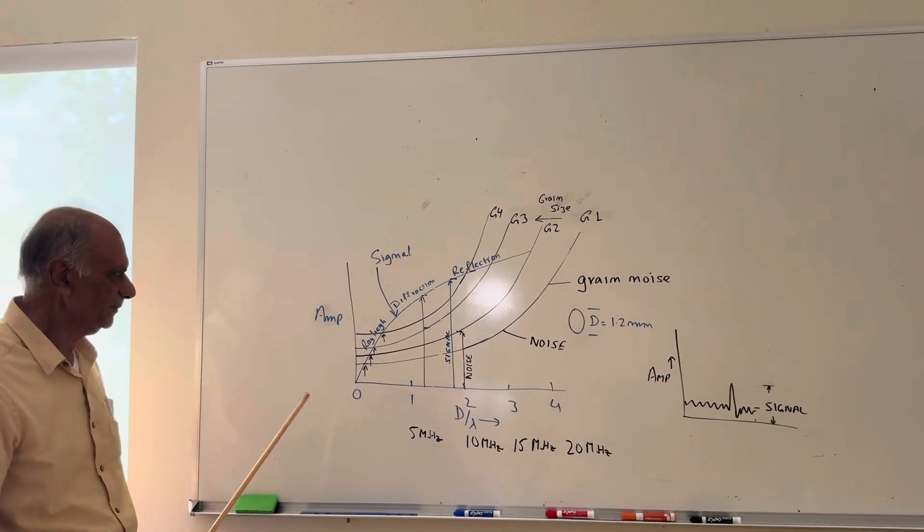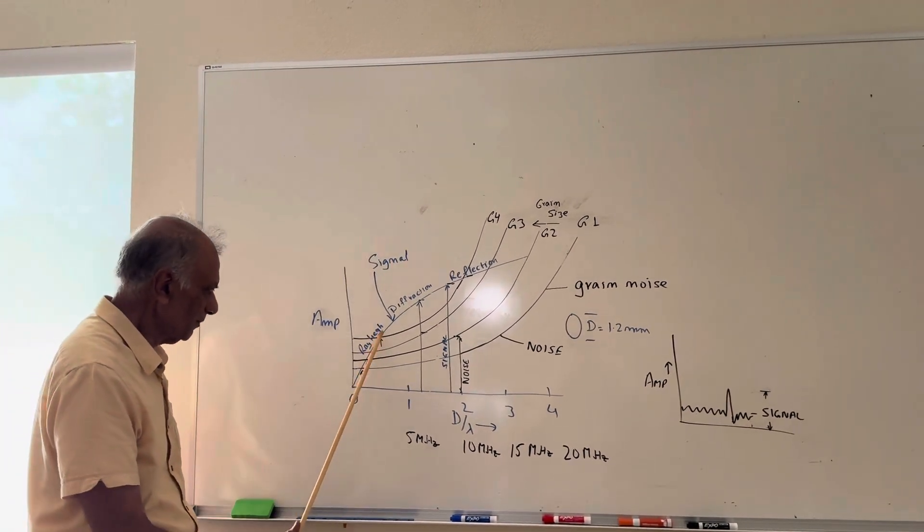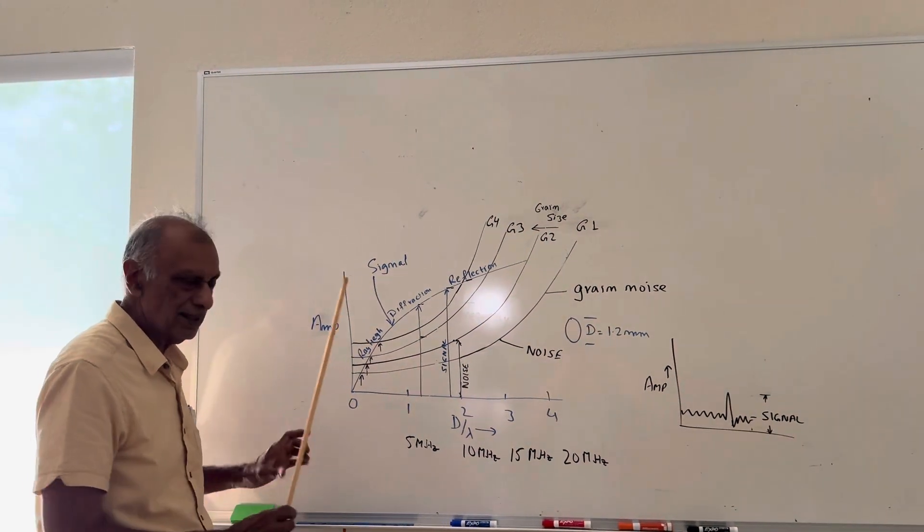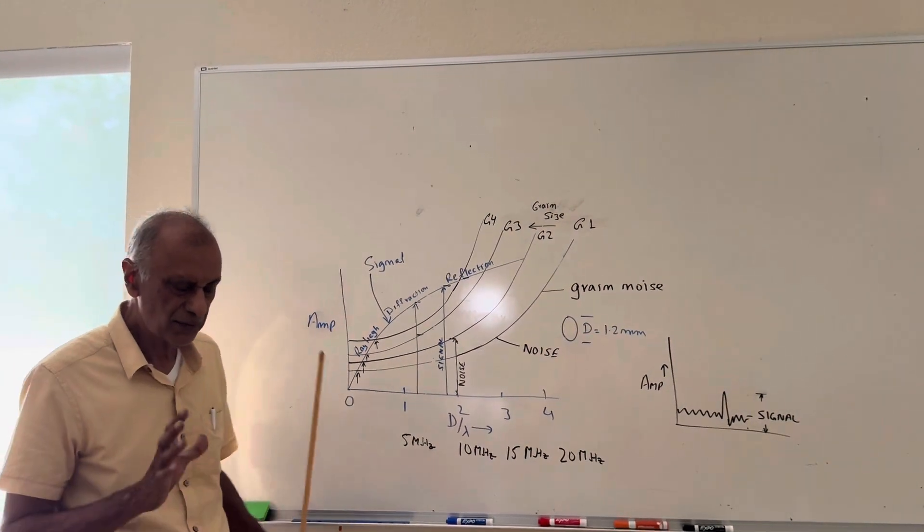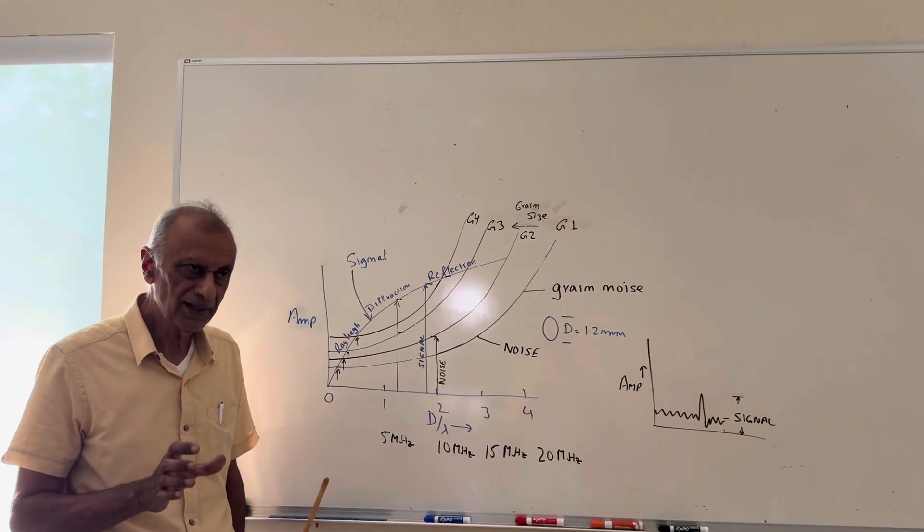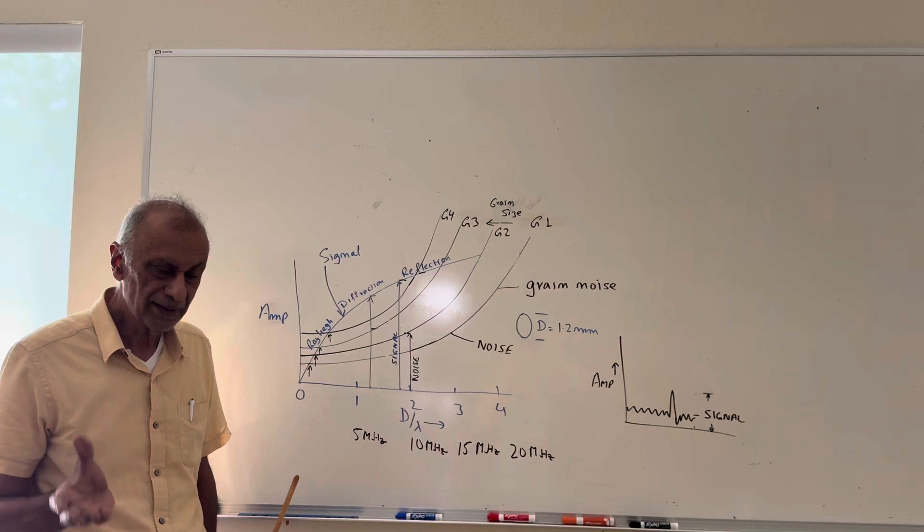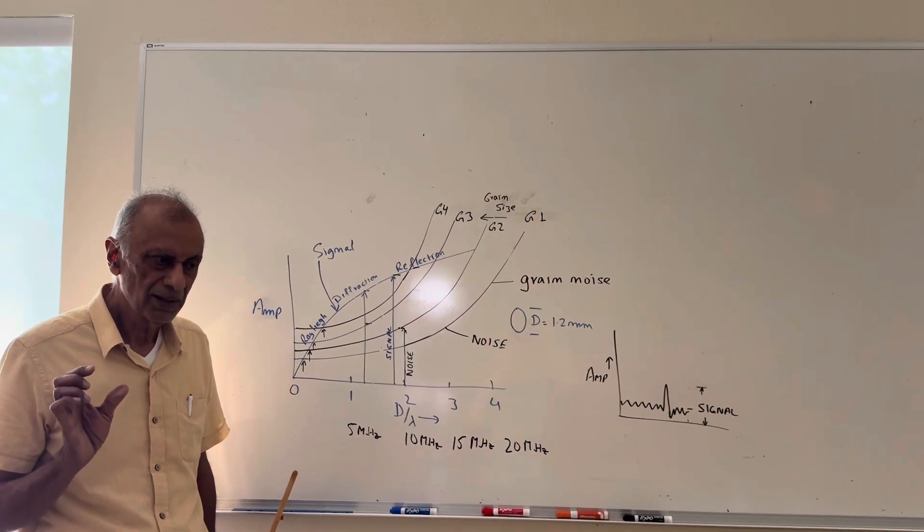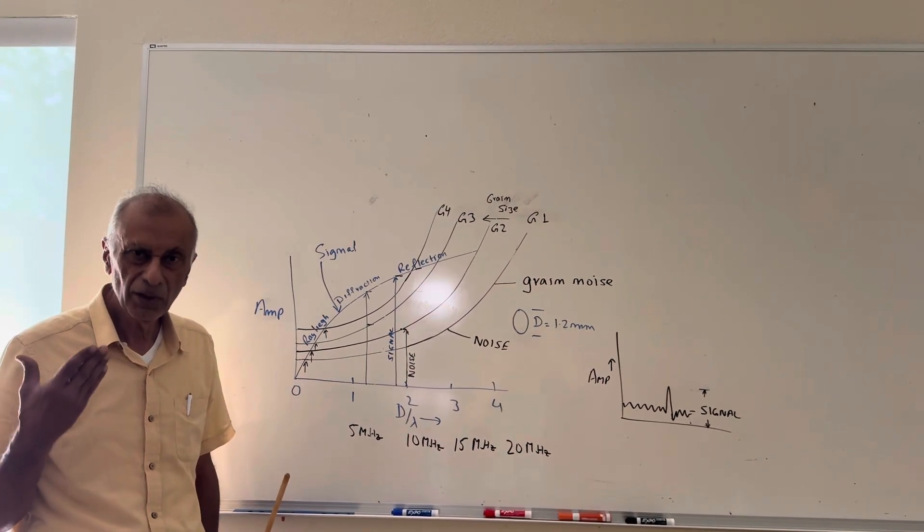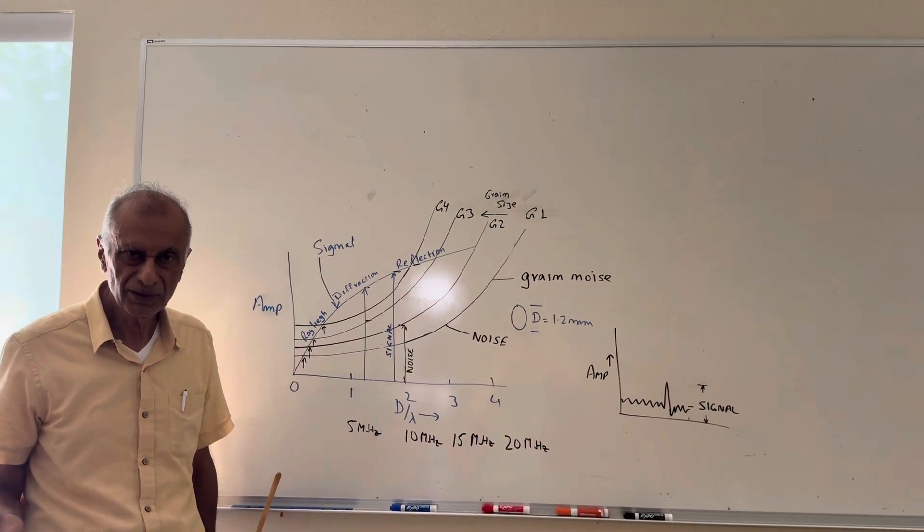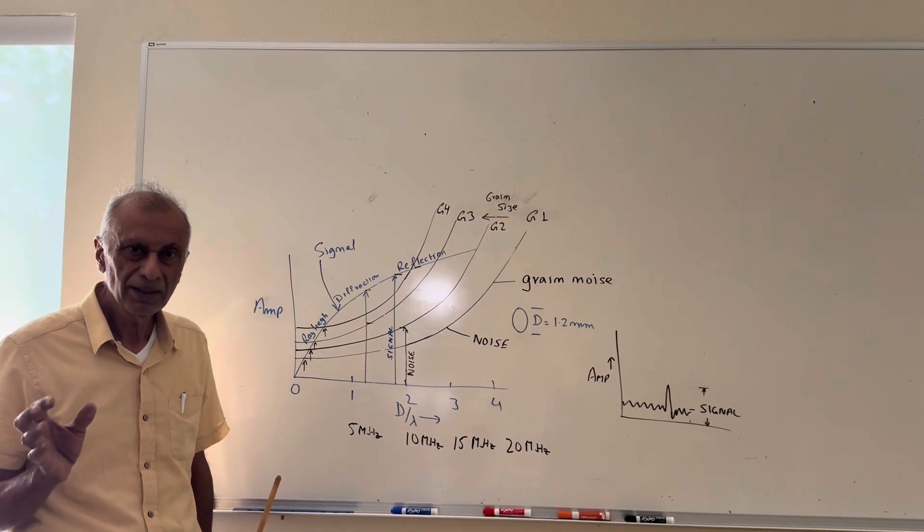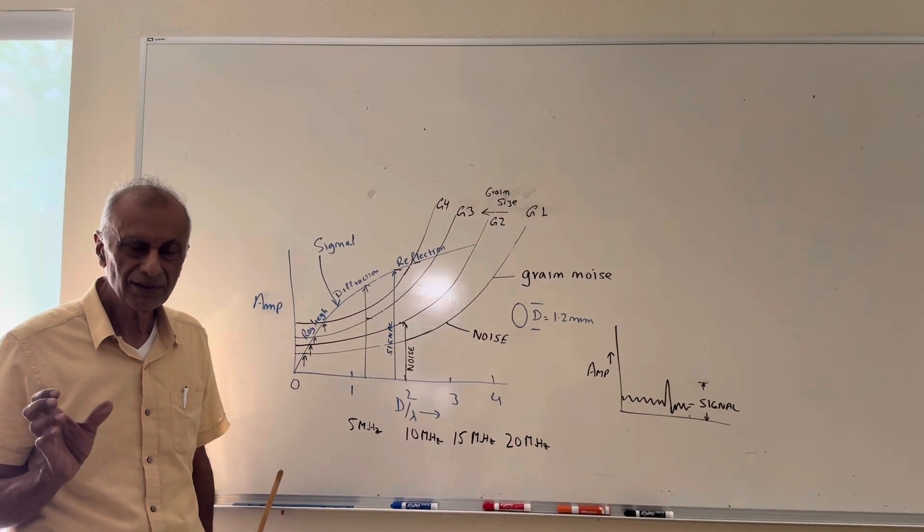So again, here is the minimum and that's the maximum, so the picture is not straightforward. It actually comes down to the signal reflected from or scattered from the reflector as compared to the noise from the grains. So there is no fixed number. If the grains are larger, then you will actually be limited to smaller flaws. As the grains get smaller, you can use higher frequencies and then you will actually be able to detect smaller flaws.